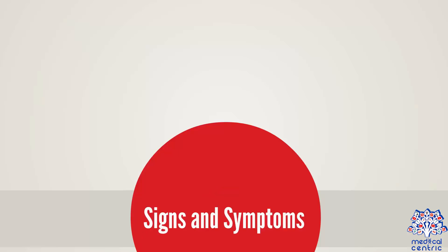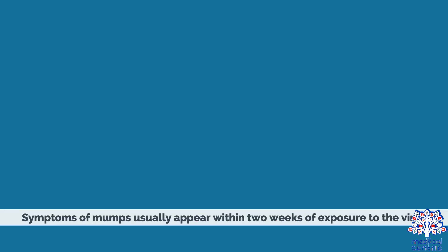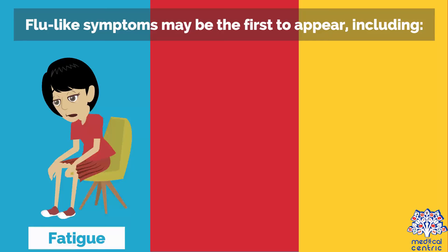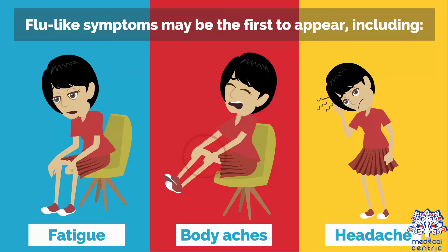Signs and Symptoms. Symptoms of mumps usually appear within two weeks of exposure to the virus. Flu-like symptoms may be the first to appear, including fatigue, body aches, headache, loss of appetite, and low-grade fever.